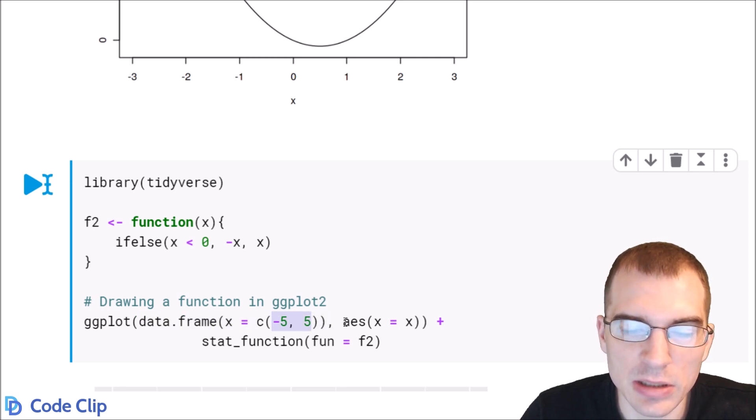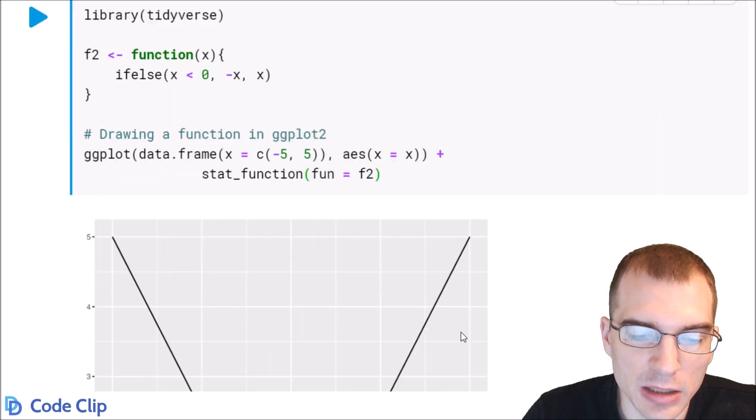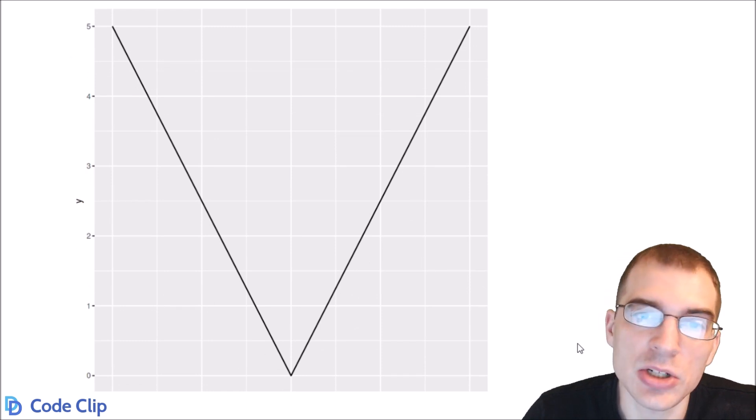And then we just set the x aesthetic to that x variable that we created. And to draw the plot we can add stat function. Then you set the argument of that fun, which is the function, equal to the function F2 that we defined earlier. We'll plot that and we see that it created a v-shaped function.